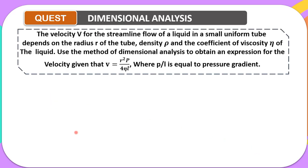The question states that the velocity v for the stream flow of a liquid in a small uniform tube depends on the radius r of the tube, the density rho, and the coefficient of viscosity of the liquid. Use the method of dimensional analysis to obtain an expression for the velocity, given that v equals r squared times p all over four times the coefficient of viscosity times l, where p over l is the pressure gradient.